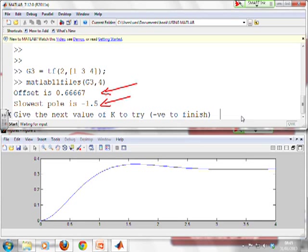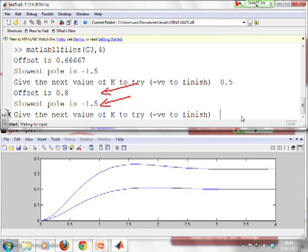Let's try 0.5. It immediately shows the new offset 0.8, the slowest pole is still -1.5, and it's produced a new plot. The offset is much bigger.